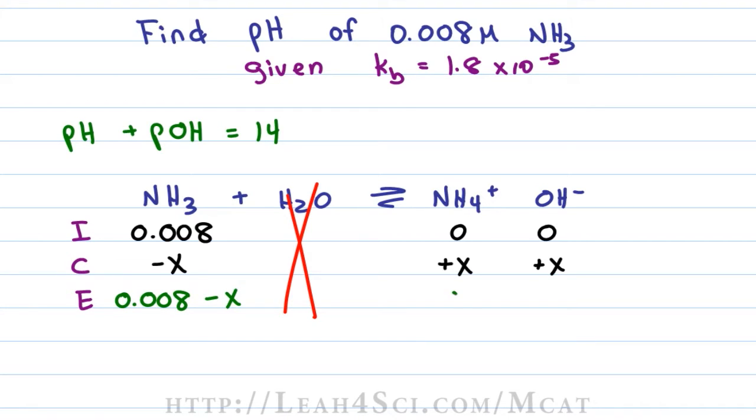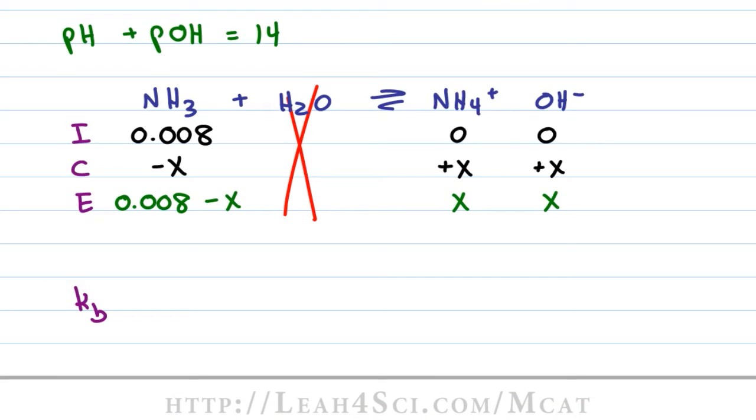Some quantity X will dissociate so that some quantity X will form for ammonium and hydroxide. So that at equilibrium, my ammonia has a concentration of 0.008 minus X. Ammonium and hydroxide each have a concentration of X. And then we set it up so that KB equals X squared over 0.008 minus X, all of that equal to 1.8 times 10 to the minus 5, and then you turn this into a quadratic expression.